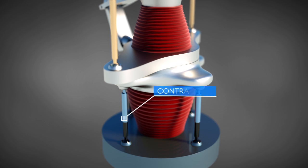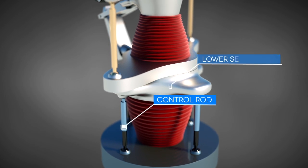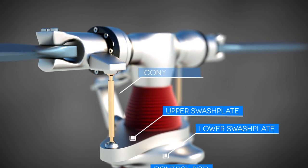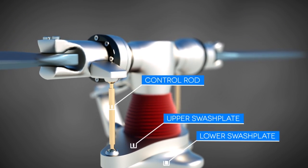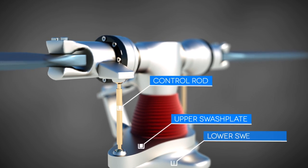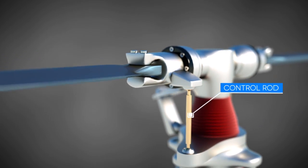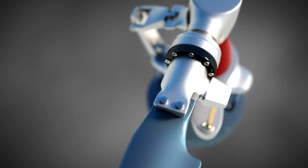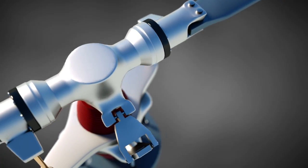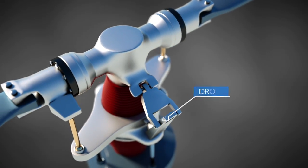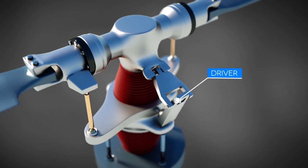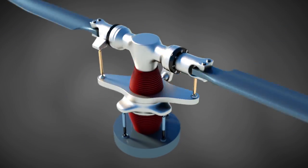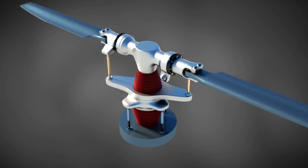Four control rods are connected to the lower part of the swashplate. The upper part of the swashplate is linked to the rotor blades through other control rods. The rotor hub or the mast is connected to the upper swashplate via a driver. That way, the swashplate moves with the rotor hub.